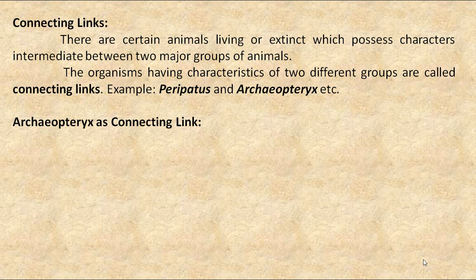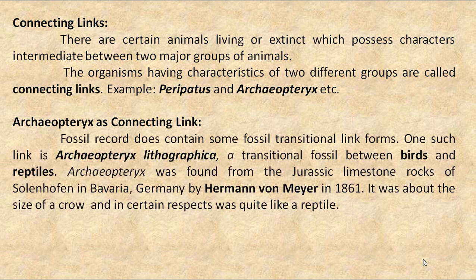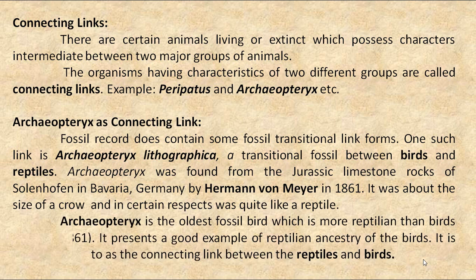Now let us see Archaeopteryx as an example of a connecting link. Fossil records do contain some transitional link forms. One such link is Archaeopteryx lithographica, a transitional fossil between birds and reptiles. It was found from Jurassic limestone rocks of Solenhofen in Bavaria, Germany, by Hermann von Meyer in 1861. It was about the size of a crow and in certain respects was quite like a reptile. Archaeopteryx is the oldest fossil bird, more reptilian than avian, and presents a good example of the reptilian ancestry of birds. It is often referred to as the connecting link between reptiles and birds.